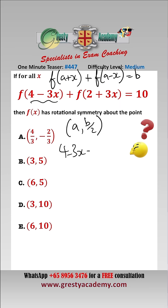4 minus 3x equal a minus p and let's let 2 plus 3x equal a plus p. Adding this one and this one gives us that 6 is equal to 2a, i.e. a equals 3.